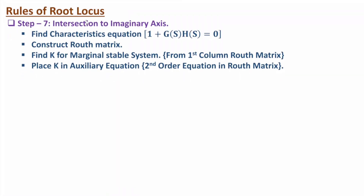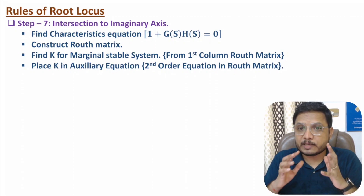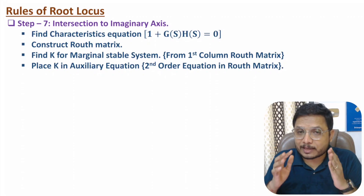The last step is based on the intersection with the imaginary axis. This is also not a compulsory step, but it is calculated if we observe that roots intersect with the imaginary axis. First we calculate the characteristic equation 1 + G(s)H(s) = 0, then we make a Routh matrix. With the Routh matrix we identify the constant value K for a marginally stable system by checking the first column of the Routh matrix. Based on the value of K we place it in the auxiliary equation, which will be a second-order equation in the Routh matrix. All these steps are not compulsory and you can understand when to apply them only through examples.